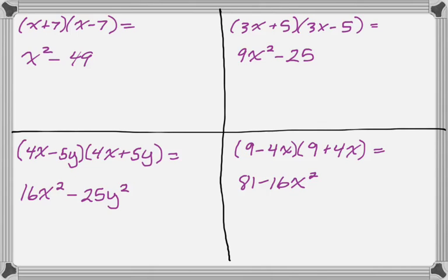So those are the special products. It's really important to know them, first of all, because you have to go in this direction really quickly. If you see a plus b squared, make sure you can do that probably in your head. But if you see a plus b, a minus b, you've got to identify it really quickly.